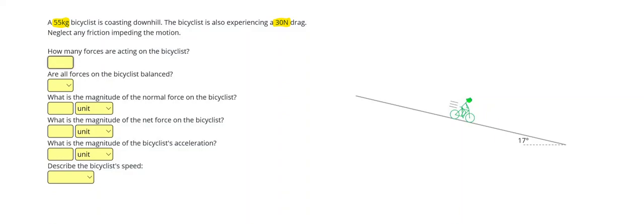Alright, let's go ahead and start out by writing down net force, mass, and acceleration. And then we can draw our forces acting on the bicyclist. First we have a weight acting straight down.